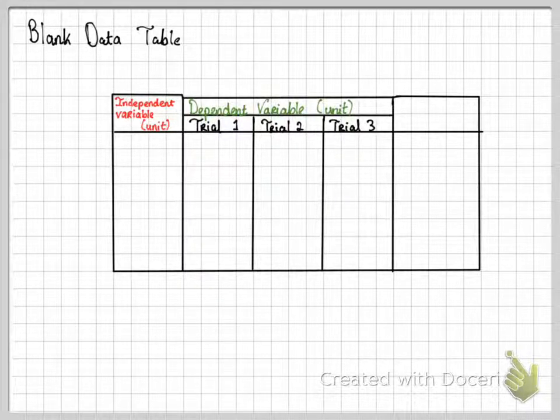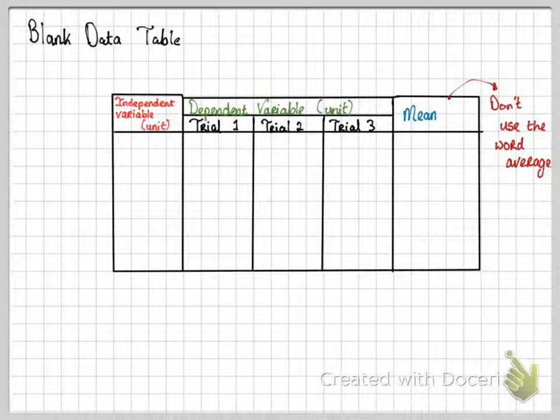And remember, dependent variables should be measured more than once. So you should have trial one, trial two and trial three. You are probably familiar with the word average. You should then try and get an average of these. But a more correct way of saying this is get the mean. Do not use the word average as it is not scientific enough.